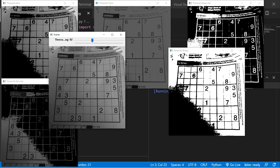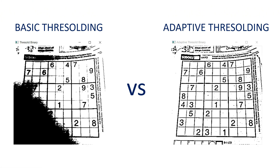If we compare basic thresholding and adaptive thresholding side by side, you can see in the basic threshold binary image a black line is created and details are not clearly visible. But in adaptive thresholding, the image quality is much better and the threshold values are well adapted. These are the key differences, so the choice of which thresholding to use — adaptive or basic — is yours.